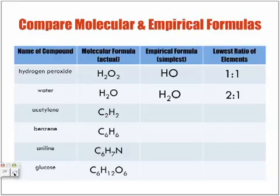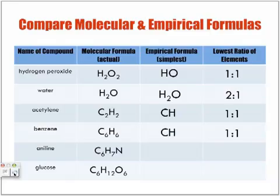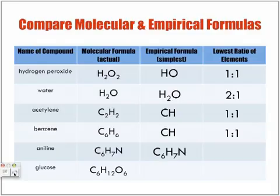Acetylene, C2H2 — can it be simplified? Yes. The molecular formula is different from the empirical formula, and it simplifies to CH — ratio one to one. Benzene, C6H6, also simplifies to CH, also ratio one to one. Notice they are completely different compounds. Aniline, C6H7N — can it be simplified? No. The molecular formula is the same as the empirical formula. The ratio of carbons to hydrogens to nitrogens is six to seven to one.